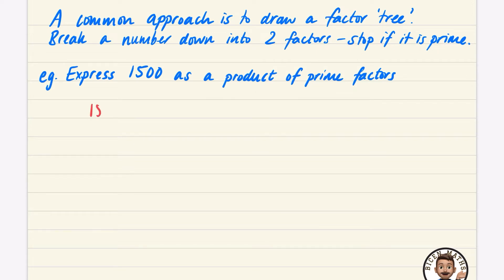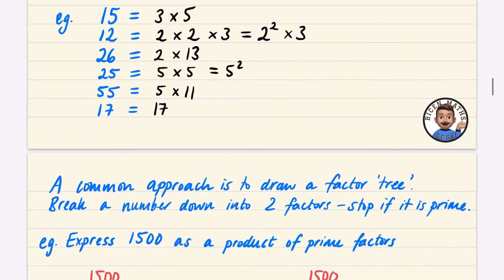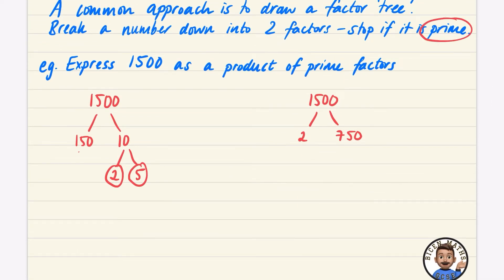Let's look at 1500. I'll split it into 150 × 10 — neither is prime, so I keep breaking them down. Breaking 10 into 2 and 5: both are prime, so I circle them. I'll also try 2 × 750 to show that different starting splits give the same answer.